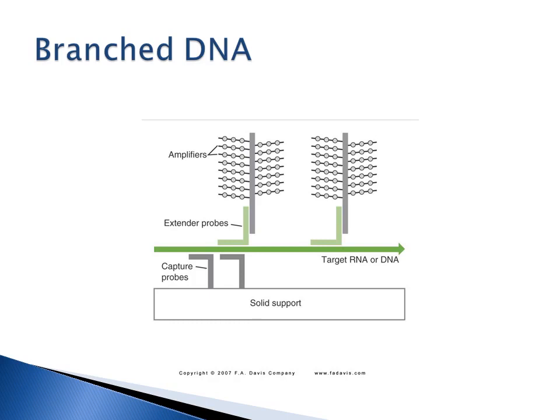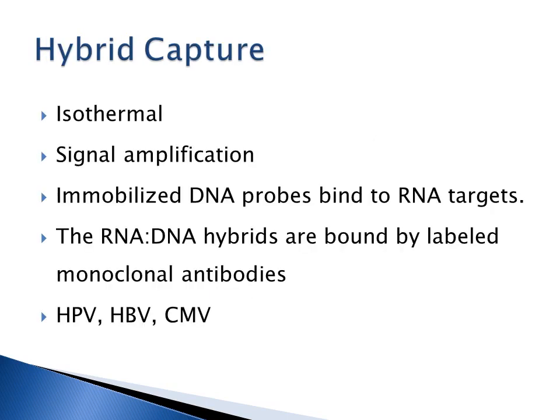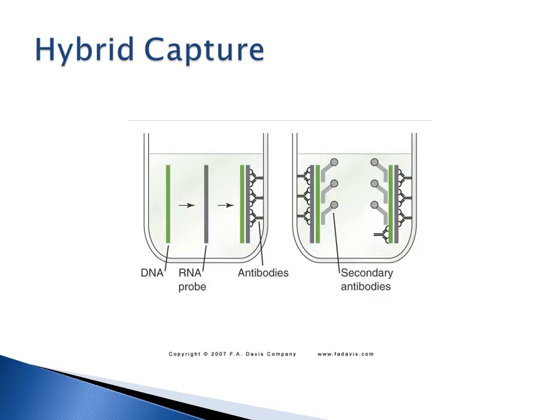Hybrid capture is another isothermal signal amplification method. Immobilized DNA probes bind to RNA targets, forming an RNA-DNA hybrid bound by labeled monoclonal antibodies. Secondary labeled antibodies then bind to the DNA. This is commercially available for HPV and CMV.